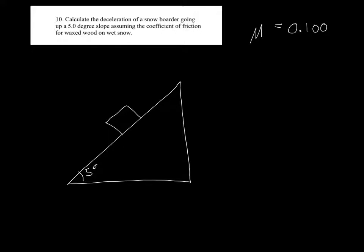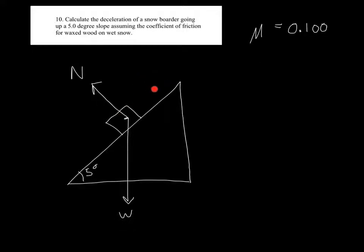I need to draw a free-body diagram and identify all the forces. There's a force due to gravity acting on him, pulling him straight down — we'll call that the force of gravity, or W, which stands for the weight. There's a normal force because he is in contact with the surface of the incline; that's perpendicular to the incline, so we'll call this N. His motion is going up, and the force of friction must oppose that motion, so friction acts down the incline.